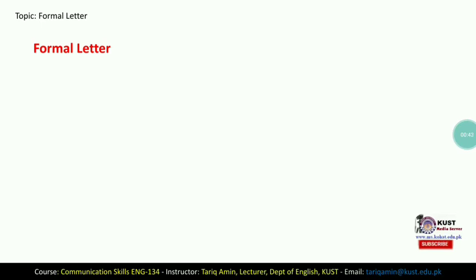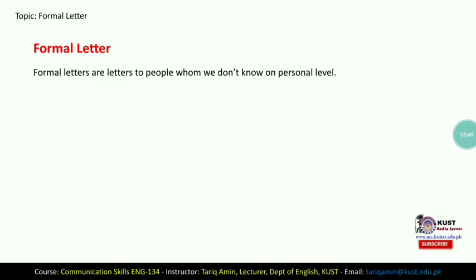In video number 1 of lecture number 26 we discussed what is a letter, and the two types: formal letter and informal letter. Formal letters are usually addressed to a person whom we don't know on a personal level, whereas informal letters are usually written to friends or family members. In informal letters we use informal language and don't follow any prescribed standard format, whereas in formal letters we follow a standard format and use formal language.